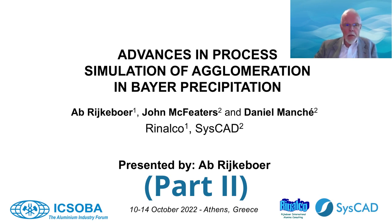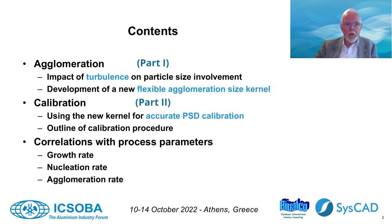Welcome back. This is part 2 of the EXOBA presentation entitled Advances in Process Simulation of Agglomeration in Bioprecipitation. Part 1 dealt with the development of a new agglomeration kernel. In the current part 2, we discuss how to calibrate the precipitation circuit model and we also have a look at important aspects of existing rate equations for growth, nucleation and agglomeration. You are encouraged to read the paper as well for further detail and understanding.